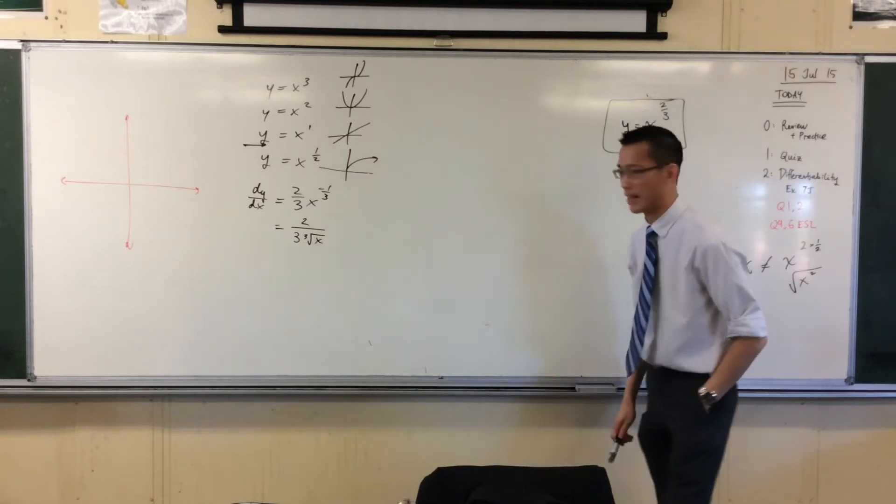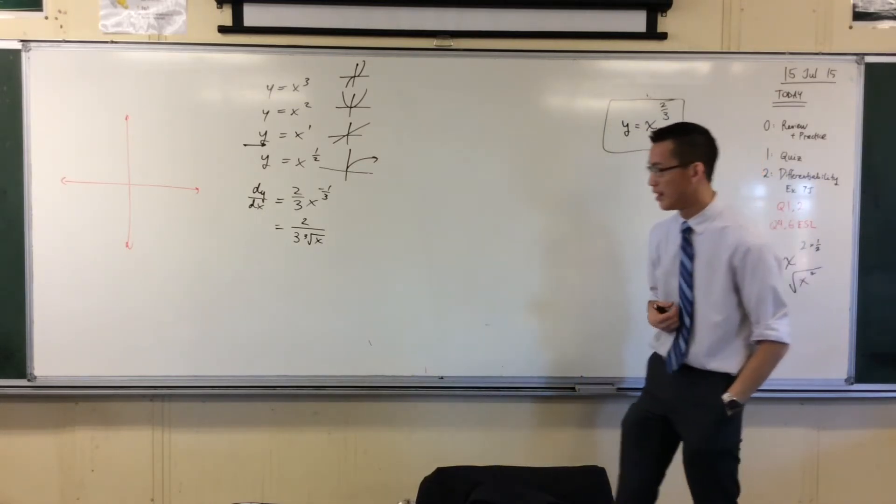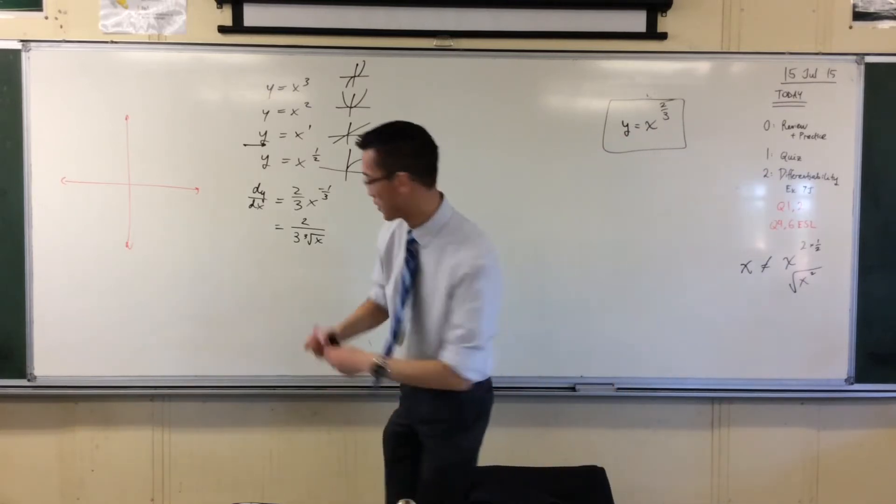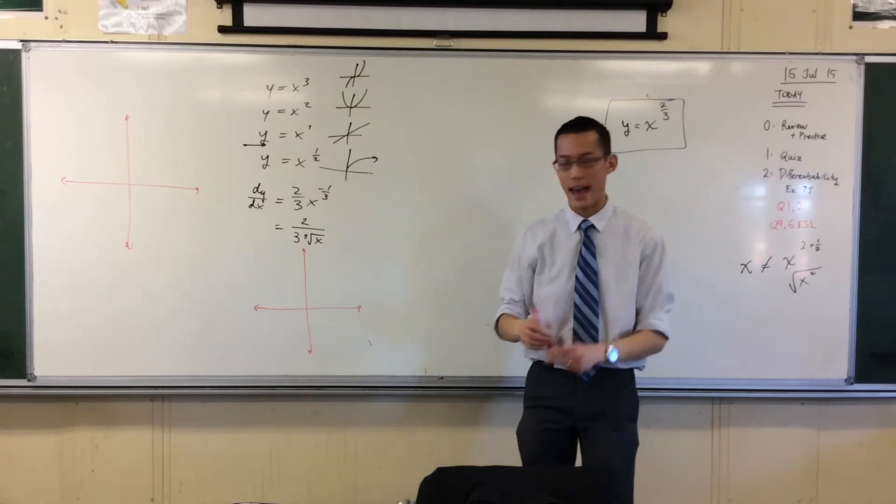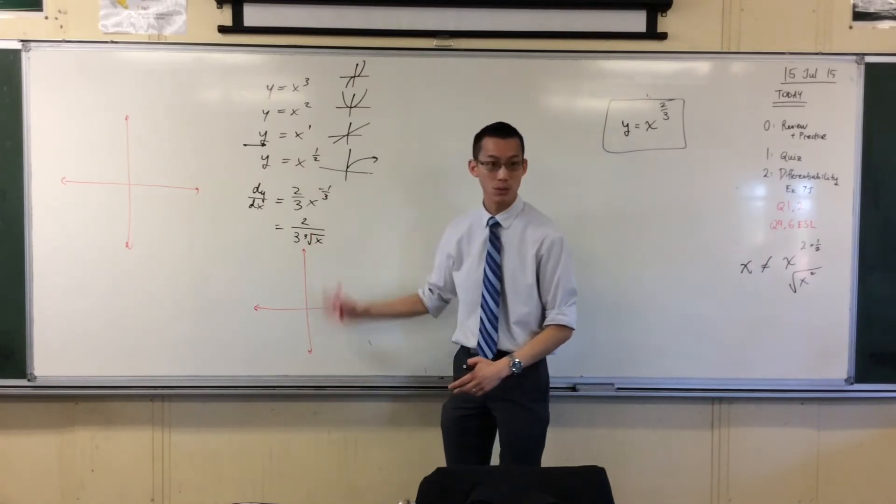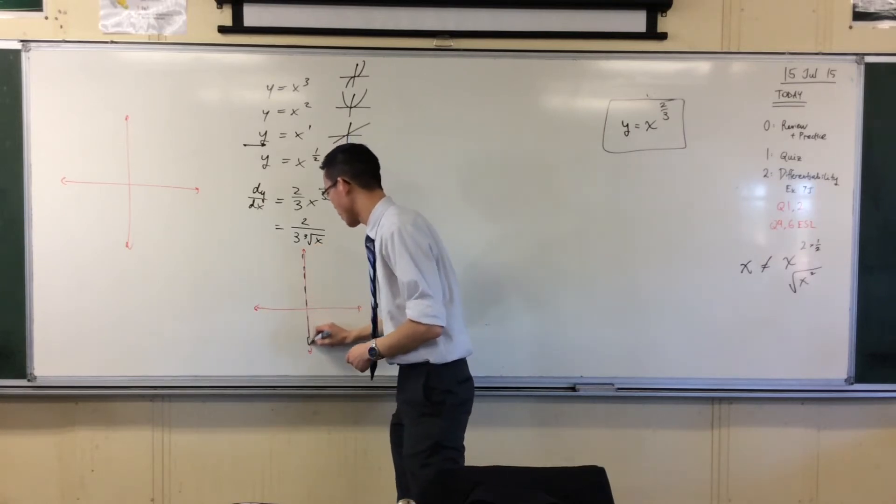You happy with that? Okay, now what's this thing look like? What does it look like? When you put zero in, it becomes undefined. Okay, so for starters, I do have an asymptote at x equals zero, right? I can't go there, can't ever ever go there, right?